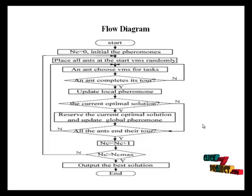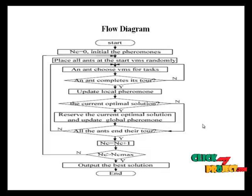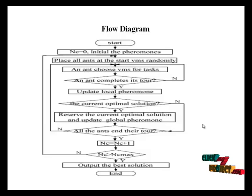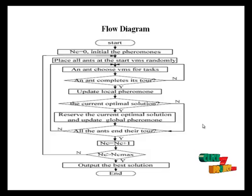After that the process is executed, the job completes, and then we choose another job. This runs simultaneously for every job and every VM. Finally we get the output — the best job matched with the best VM.